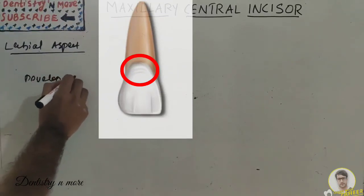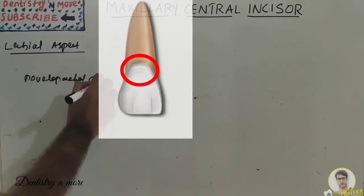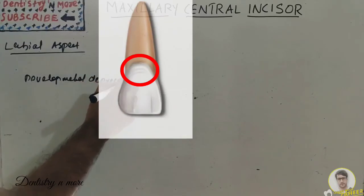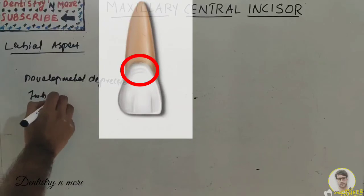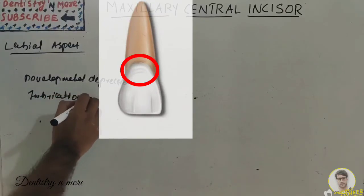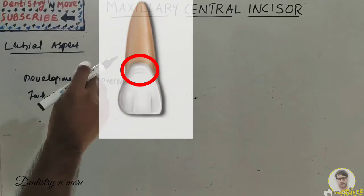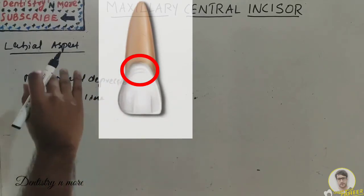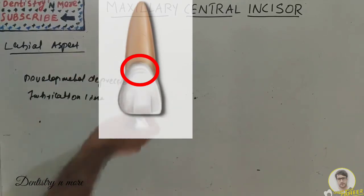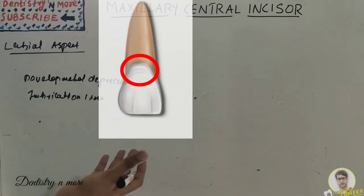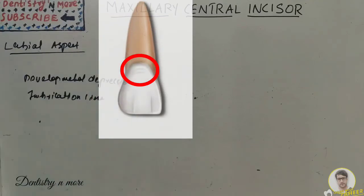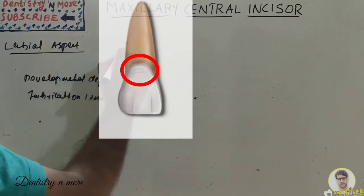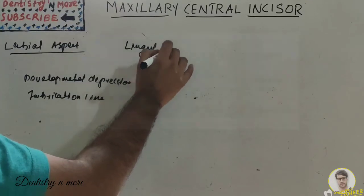Imbrication lines are faint curved lines that roughly parallel the CEJ in the cervical third of the surface, and they are not always present. The height of contour of the labial surface is located at the cervical third.